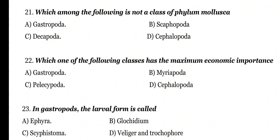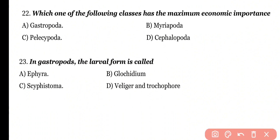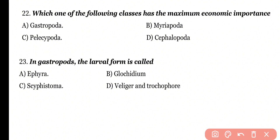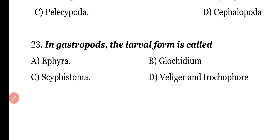Question number 22: Which class has maximum economic importance? Options: Gastropoda, Myriapoda, Pelecypoda, Cephalopoda. Correct answer is option C. Pelecypoda (Bivalvia), including clams and oysters, is a major food source; shells of clams are also used for making buttons, giving this class maximum economic importance.